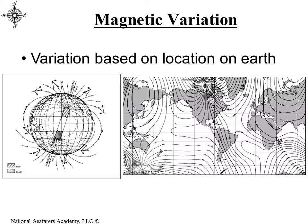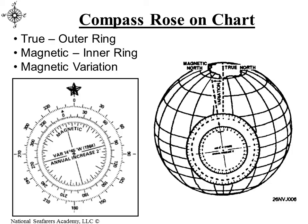Just a quick review on variation. Variation is going to be based on where you are on the earth's surface. We can find variation given to us on the compass rose on a chart. As you can see, the outer ring of the compass rose is the true north compass rose, the inner ring is the magnetic, and in the middle of the compass rose we see the variation is given to us. It's typically a change per year, so you have to calculate that for the current year. On the right-hand side, you can see a diagram showing the earth with the compass rose inset, how true north aligns with the star on the compass rose, and the deflection and variation of the magnetic.